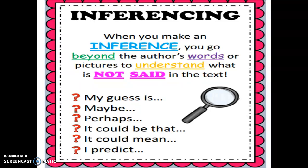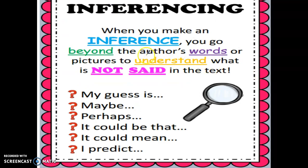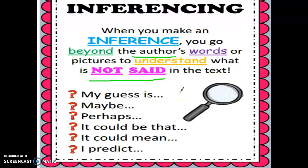So what is an inference? An inference is when you make a really smart guess. You have to go beyond what the author actually tells us — beyond the author's words — to make a smart guess that helps us understand something from the story that the author doesn't actually come out and say. Inferences might start like: my guess is, or maybe, perhaps, it could be that.